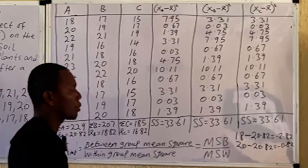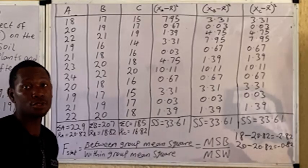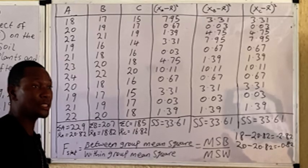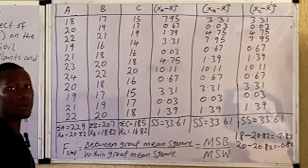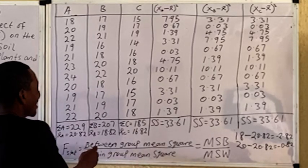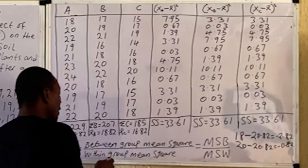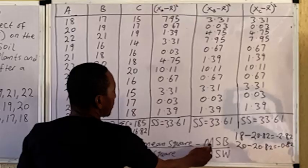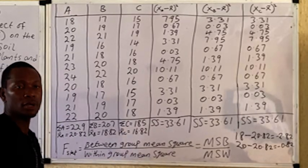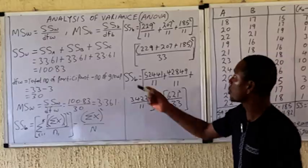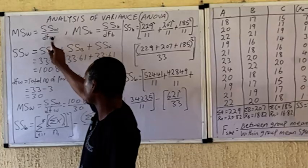Once you have the sum of squares for all three groups, you are at a critical stage where you can apply the ANOVA formula. The F-statistic equals the Mean Square Between Groups divided by the Mean Square Within Groups. The Mean Square Within Groups equals the Sum of Squares Within divided by its degrees of freedom, and similarly for the Mean Square Between Groups.